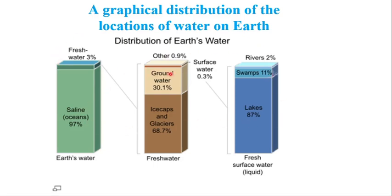This is a graphical distribution of the location of water on earth. Earth water: 97% is saline, that is in the ocean, and 3% is fresh water. Out of this 3%, 68.7% is locked in ice caps and glaciers in the form of solid, and 30.1% is ground water, and the rest is 0.9%. From this, 0.3% is surface water. This is all fresh water. From 0.3% surface water, 87% is in lakes, 11% in swamps, and 2% in rivers, which is fresh surface water in liquid form and in usable form.